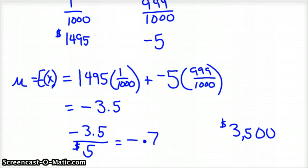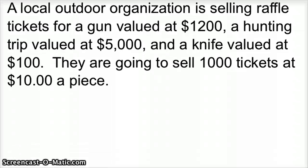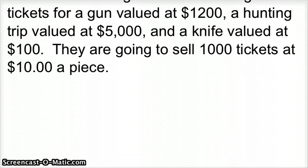We're going to lose that if we do all $1,000. The math checks out then. That's expected value for kind of a simple case. But let's look at one that's a little more complicated. A local outdoor organization is selling raffle tickets for a gun valued at $1,200, a hunting trip valued at $5,000, and a knife valued at $100. They're going to sell 1,000 tickets at $10 a piece.